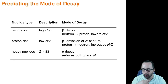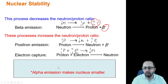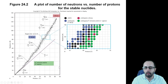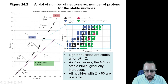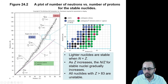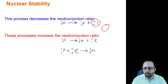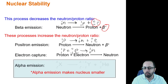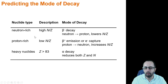You don't have to memorize that table. You have a secret weapon: the periodic table, which gives you the average atomic mass in AMUs of the most stable nuclei. You can usually guess based on the mass number relative to the average atomic mass whether a nucleus is neutron-rich, proton-rich, or obviously heavy.